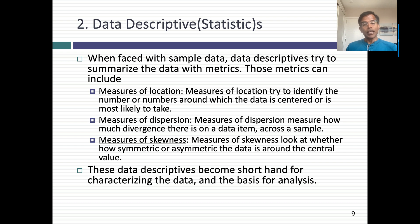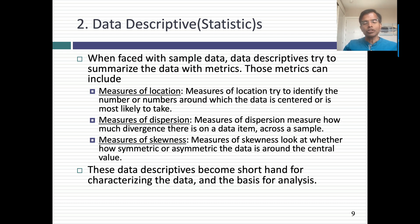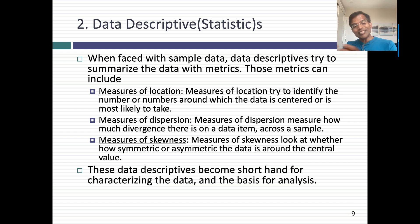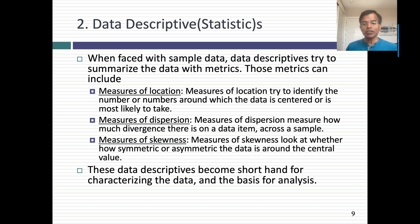Once you've collected your sample data, you compute what I call descriptive statistics — or data descriptives. You're trying to take a large amount of data and summarize it in ways people can understand. That summarization can take the form of measures of location: you take a hundred data points and compute an average. You can get measures of dispersion — how much variation there is around the typical number. And you can get measures of skewness — are you more likely to get values exceeding or falling below your typical number? These data descriptives become shorthand for characterizing the data.